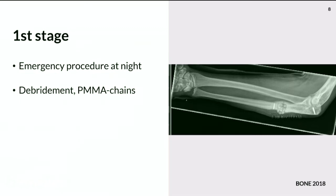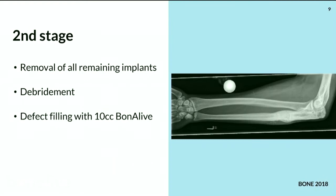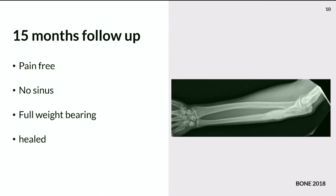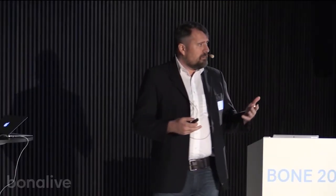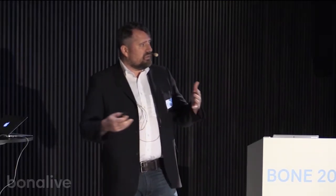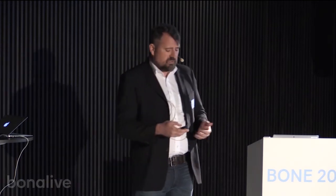They did not remove the screws, so I performed a two-stage procedure. I removed everything and filled the gap with 10 cubic centimeters. At a 15-month follow-up, everything consolidated and healed. The patient is pain-free — he was a sporty guy — and is back to weight-bearing. Even in the upper extremity, there are cases where this works.